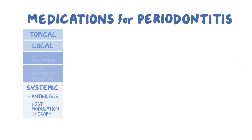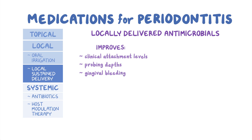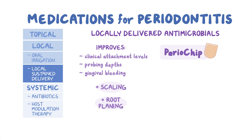The next delivery method is local sustained release, which is typically used for locally delivered antimicrobials. These medications cause a slight improvement in clinical attachment levels, probing depths, and gingival bleeding, so they are usually used as an adjunct to scaling and root planing. Locally delivered products include periochip, atrodox, and arestin.